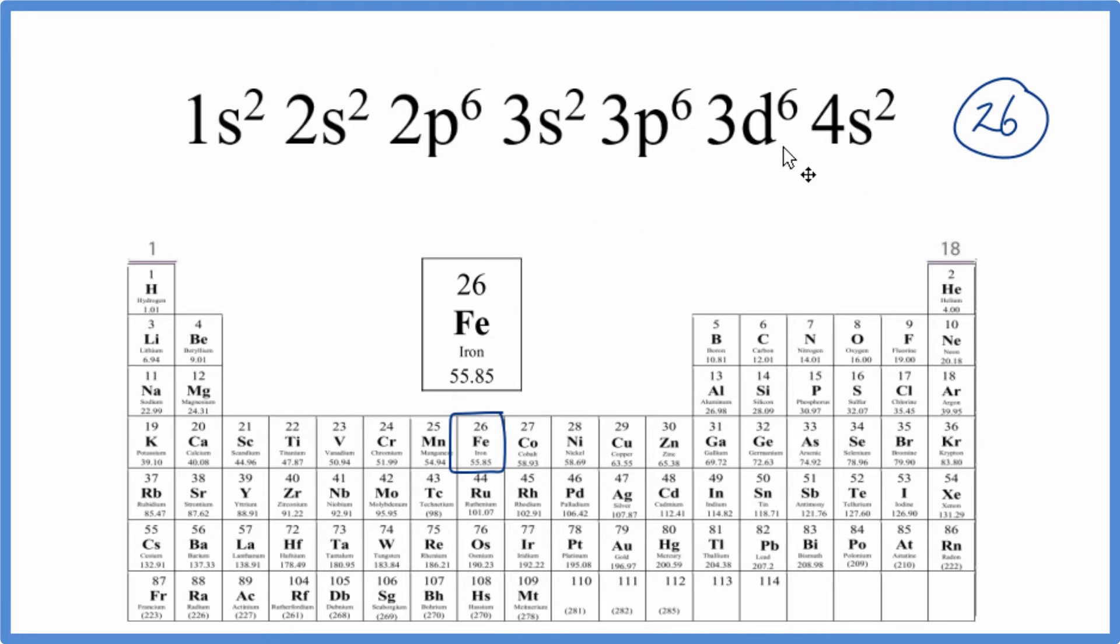This is the long form or full electron configuration here for iron. We could write this in an abbreviated or a condensed form. So we'd find the element before iron, the noble gas before iron. So iron's 26, we go back to 18,